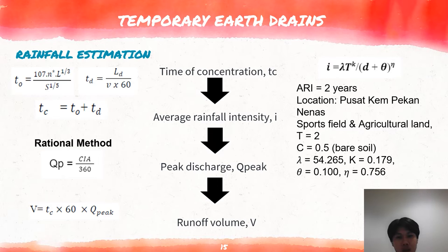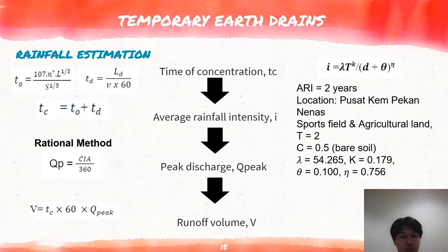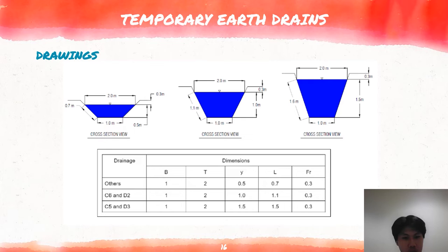Next, peak discharge can be calculated using the rational method, which is widely used for small catchment areas. For the runoff coefficient C, each pitch's ground-cover coefficient is equal to 0.5 as the site is all bare soil during the early phase. I is the average rainfall intensity and A is the flow area. The design peak flow is calculated, so all QD must be less than QC for all drainage designs. Lastly, the rainfall volume is also calculated using the formula. The detailed drawing of the temporary earth drain shows that there are several drains in one catchment area — for example, there are 3 drains in catchment area A.